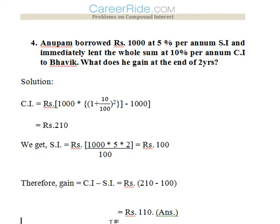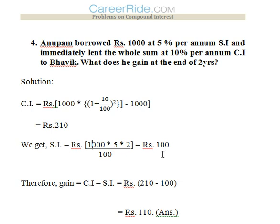Fourth question: Anupam borrowed Rs. 10,000 at 5% per annum simple interest and immediately lent the whole sum at 10% per annum compound interest to Bhavik. What gain does he have at the end of 2 years? CI is greater than SI, so he gains. CI = 10,000 × (1 + 10/100)² − 10,000 = Rs. 2100. SI = 10,000 × 5 × 2 / 100 = Rs. 1000. Gain = 2100 − 1000 = Rs. 1100.